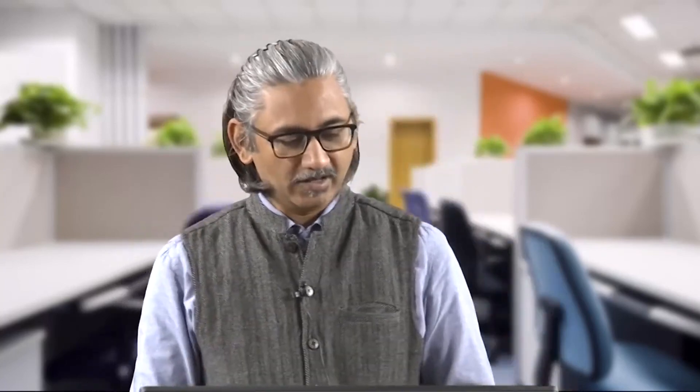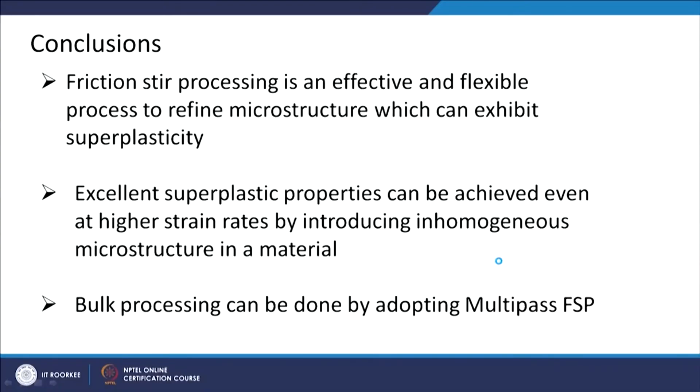To conclude, friction stir processing is an effective and flexible process to refine microstructure to exhibit superplasticity. You can achieve very good superplastic properties at relatively higher strain rates by introducing this inhomogeneous composite structure. FSP can easily be adopted as a bulk processing technique by doing multiple passes. This is the case study on friction stir processing using severe plastic deformation to achieve superplasticity in the material.